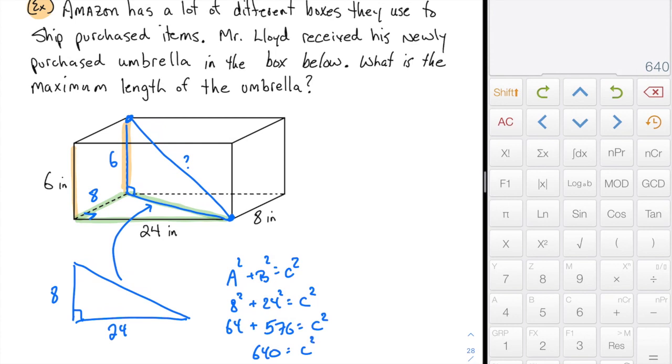576 and the 64 make 640. And the square root of 640 is approximately 25.298, so 25.3. So 25.3 is approximately C. So that means that this side is 25.3.